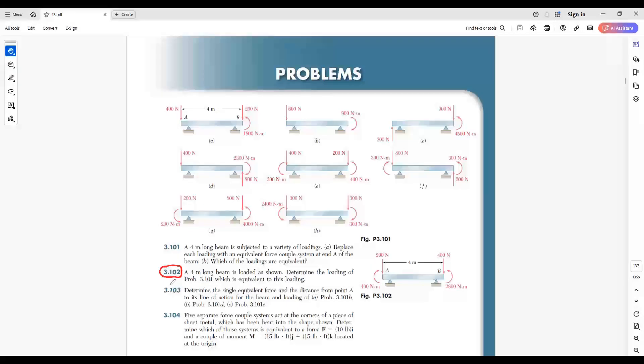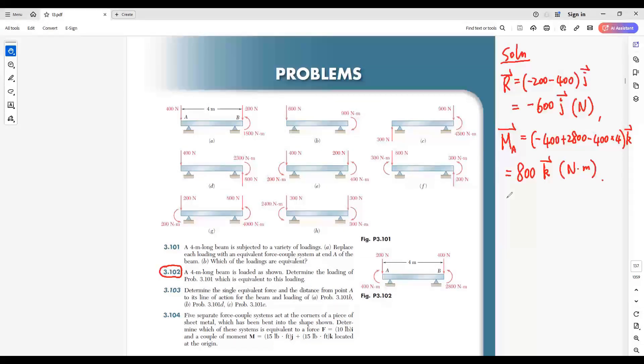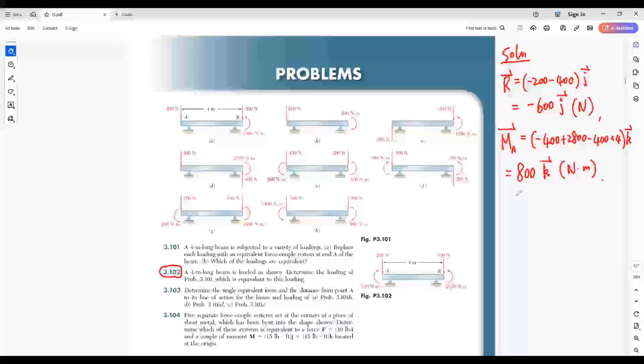Problem 3.102. A 4-meter long beam is loaded as shown in this figure. Determine the loading of the problem 3.101, which is equivalent to this loading. Solution. Here is the loading for this problem.